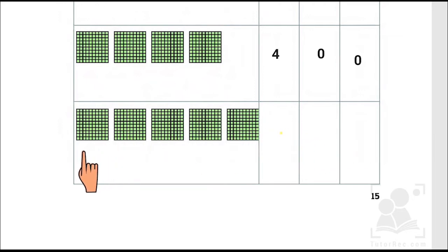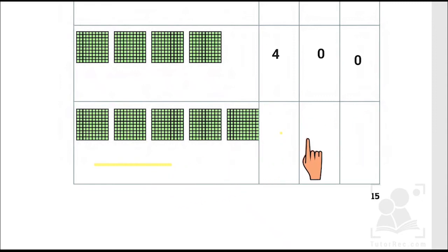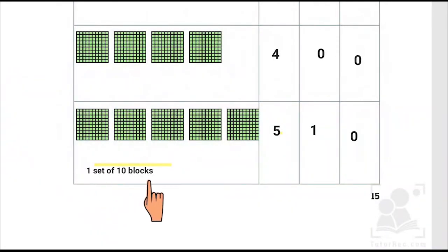Let's try another example. What if we have one more set of ten blocks? Let me just draw it for you. Kids, just consider this as one set of ten blocks. So we have one, two, three, four, five - it means we write five hundreds. We have one set of ten blocks, so that means we have one ten and zero ones. So we write five, one and zero. We have written one in tens because we are considering this yellow line as one set of ten blocks - that's why we have written one ten over here.